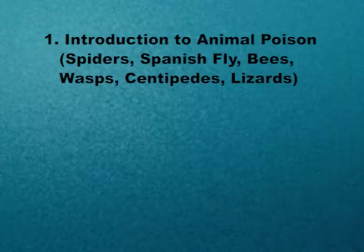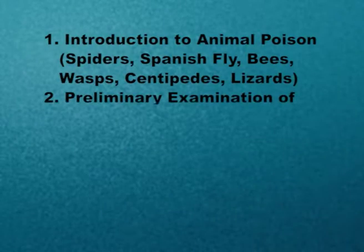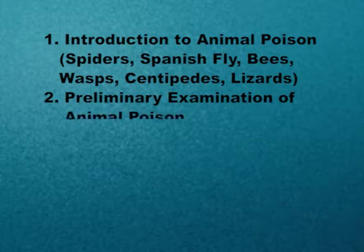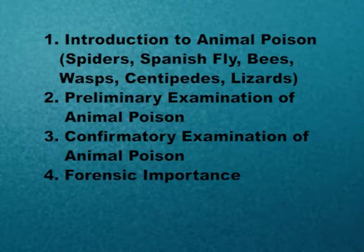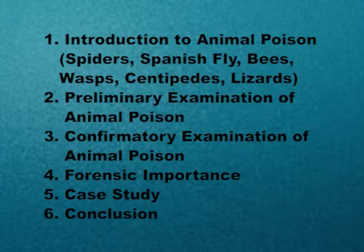Module 1 will be Introduction to Animal Poisons: Spider, Spanish Fly, Bee, Wasp, Centipedes, and Lizard. Module 2 will be Preliminary Examination of Animal Poison. Module 3 will be Confirmatory Examination of Animal Poison. Module 4 will be its Forensic Importance. Module 5 will discuss Case Study, and Module 6 will be our conclusion.